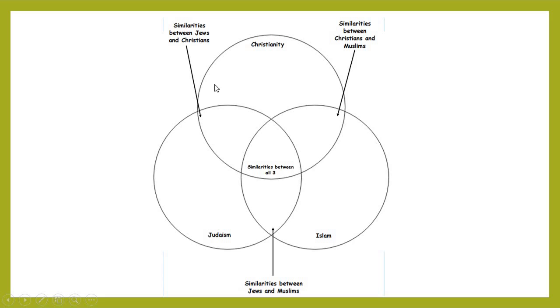These larger areas of the circle are where you would bullet point and summarise information that is specific only to Christianity, only to Islam, and only to Judaism.